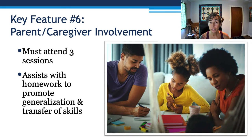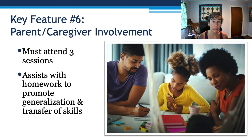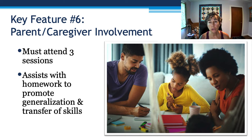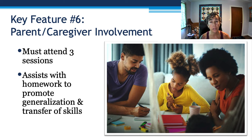Feature six: parent and caregiver involvement. The parents or caregivers must attend three sessions — they can't just send their kid to OT and be done with it. They must assist with homework to promote generalization and transfer of skills, working on different tasks in different environments. We need the family to contribute to that.